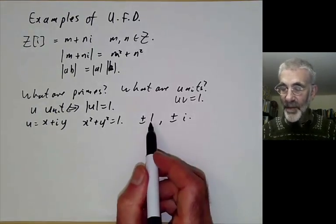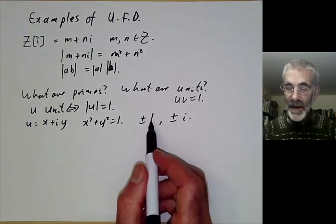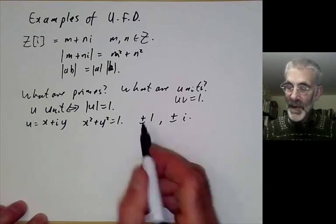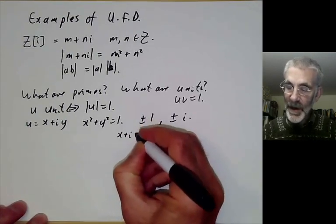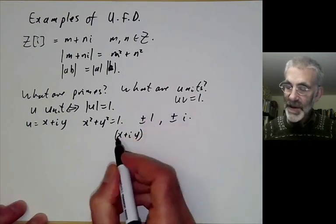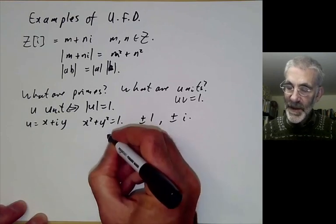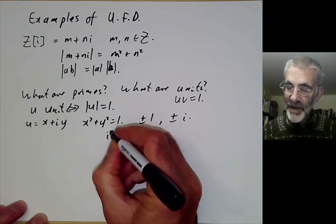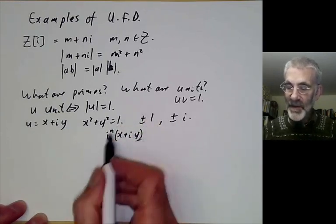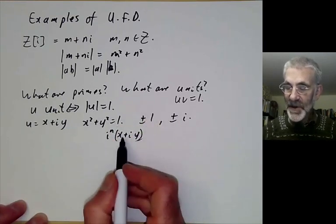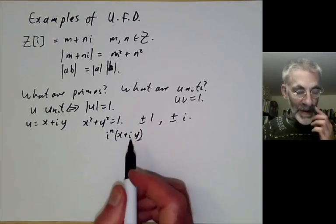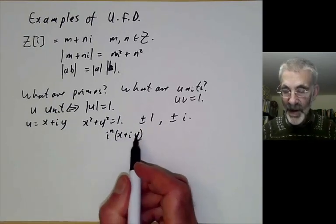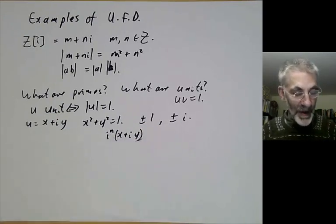This means that Gaussian primes tend to come in families of four, because if x plus iy is a prime then so is x plus iy times any power of i. So whenever you have a Gaussian prime you have three others given by multiplying it by units.